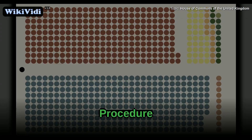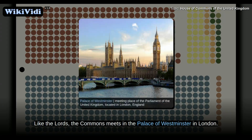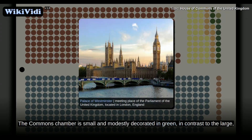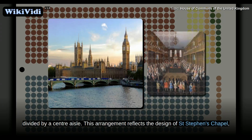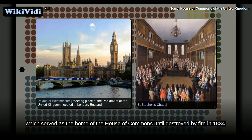Procedure. Like the Lords, the Commons meets in the Palace of Westminster in London. The Commons chamber is small and modestly decorated in green, in contrast to the large, lavishly furnished red Lords chamber. There are benches on two sides of the chamber, divided by a centre aisle. This arrangement reflects the design of St. Stephen's Chapel, which served as the home of the House of Commons until destroyed by fire in 1834.